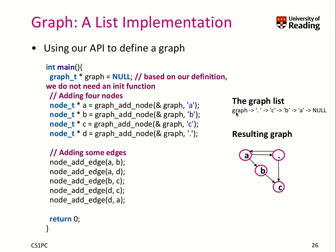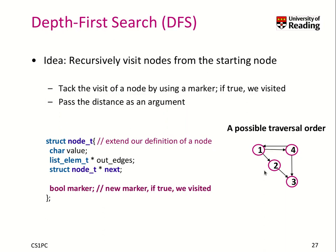At the end, the graph list itself will look as follows: this graph pointer will point to the node with dot, then to c, to b, to a, and finally to null. We have also stored those edge information, so we get our resulting graph.